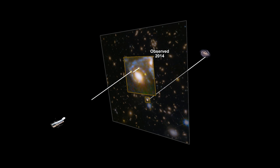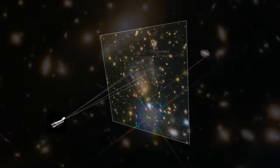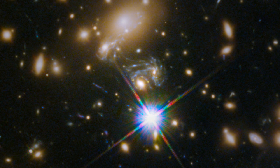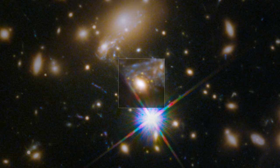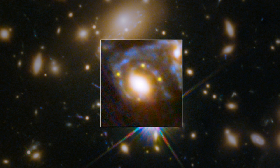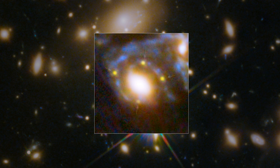The light from the dying star was magnified by the mass of the cluster, and as it is perfectly aligned with one of the galaxies in the cluster, its light has been split into four images.